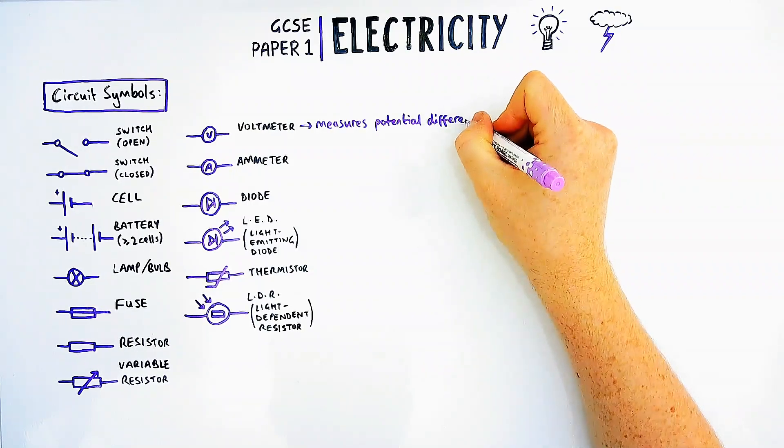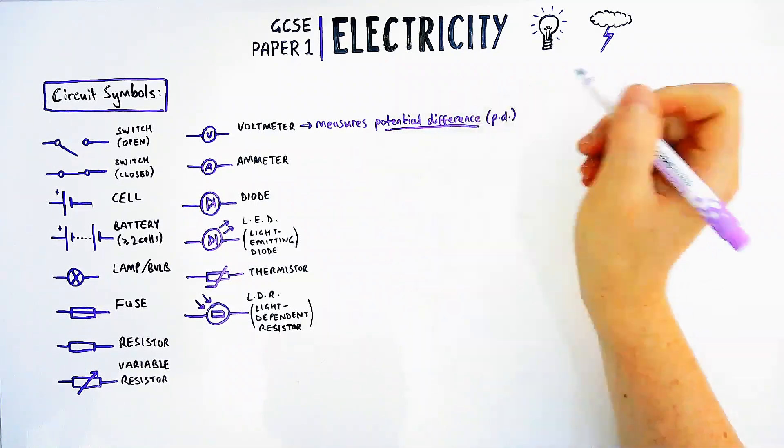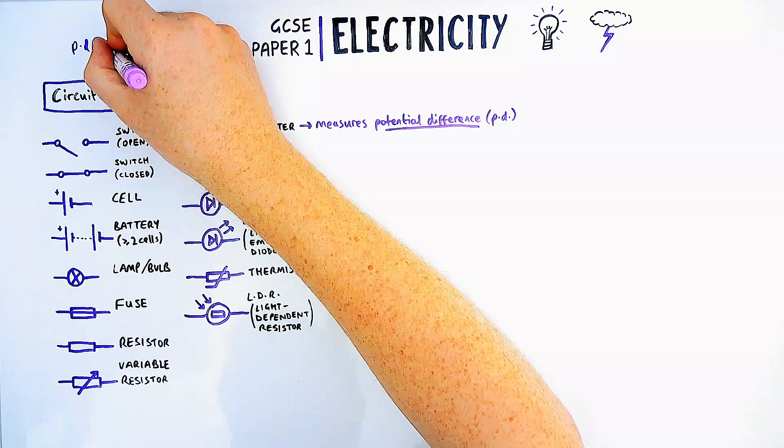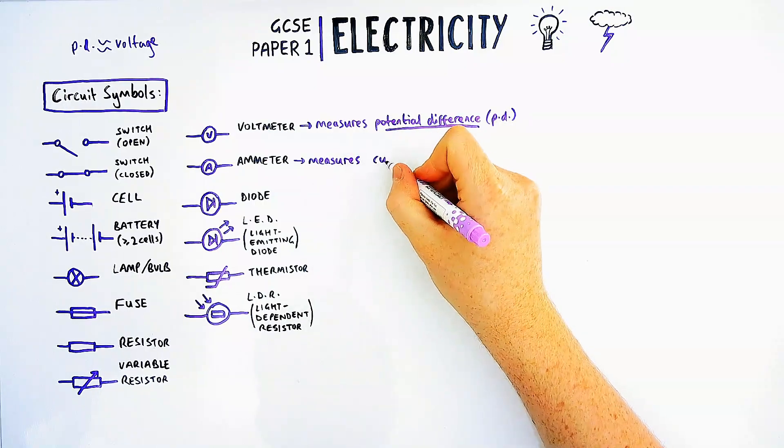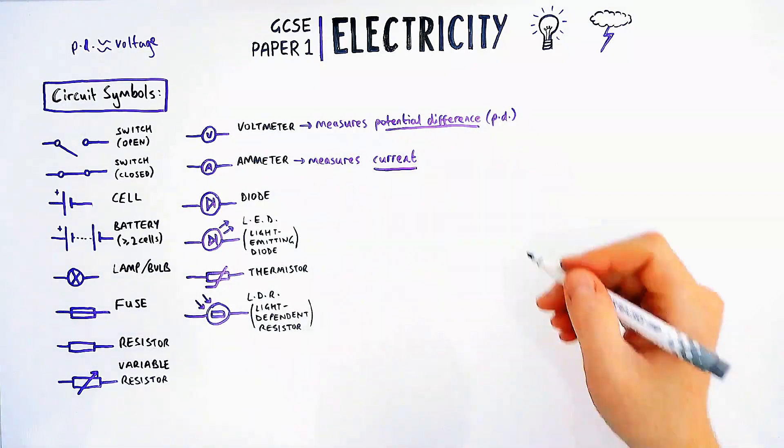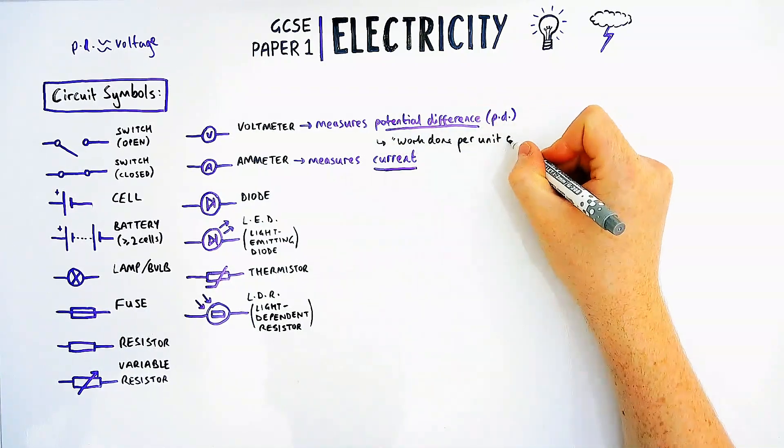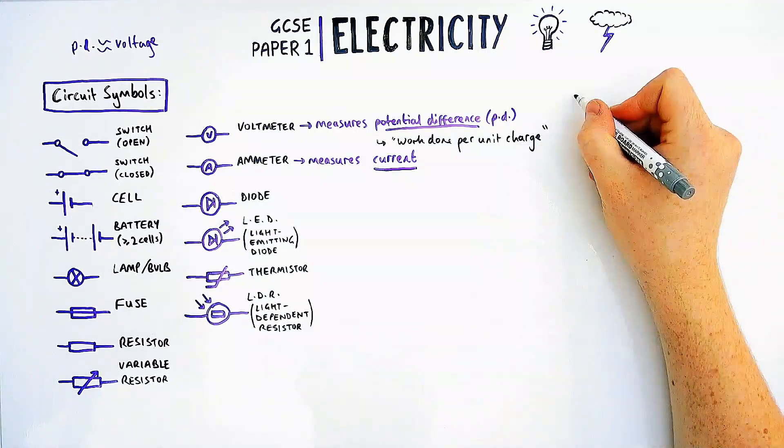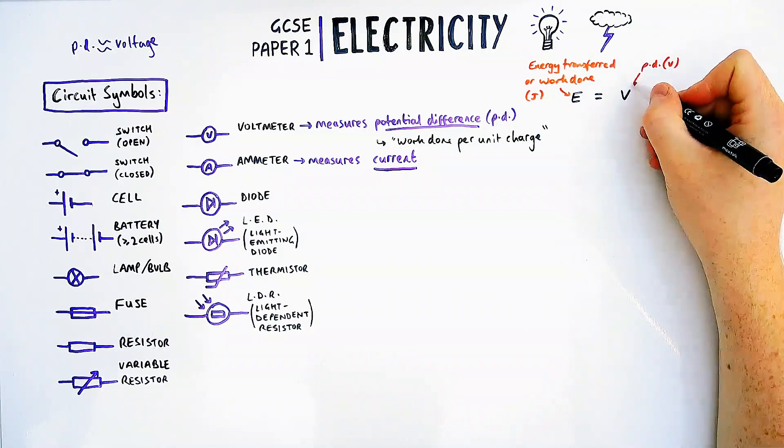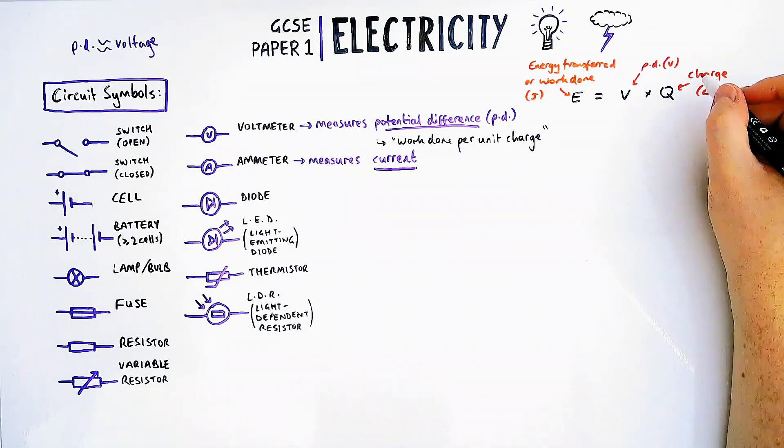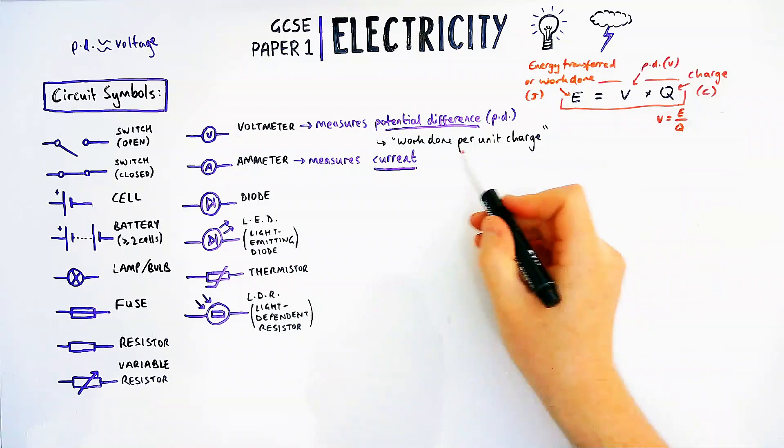What we're going to look at first is these two ones at the top right here: voltmeters and ammeters. A voltmeter will measure potential difference in a circuit. Potential difference or PD is exactly the same thing as voltage, but exam questions will use the word potential difference. The definition for potential difference is the work done per unit charge. We can know this definition by looking at an equation: E equals V times Q, or V equals E over Q, which is work done divided by charge.